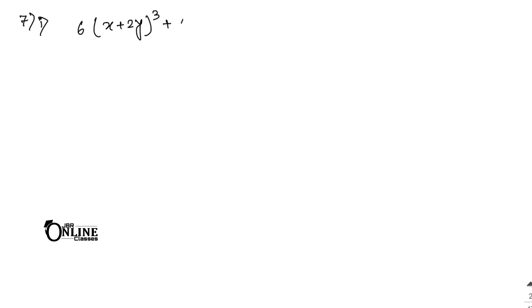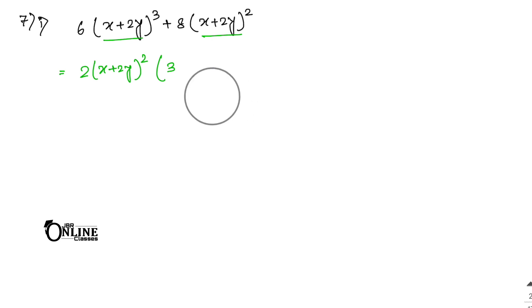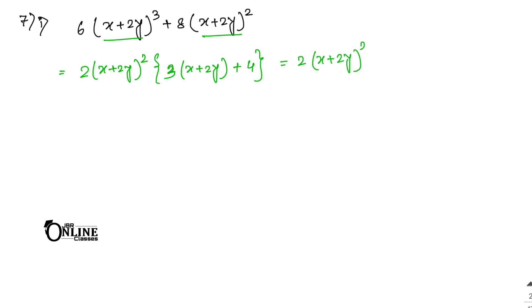Sum number 7.1: 6(x + 2y)³ + 8(x + 2y)². The smallest power is square, so (x + 2y)² is common. The HCF of 6 and 8 is 2. So write down 2(x + 2y)². Inside the bracket: 3(x + 2y) + 4, since one (x+2y) is factored out from the cube. Expanding: 3x + 6y + 4. The answer is 2(x + 2y)²(3x + 6y + 4).